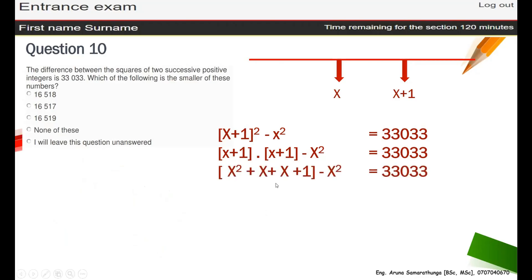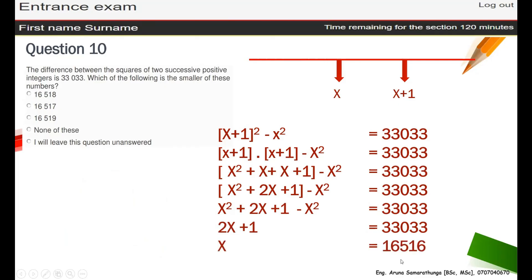Then you can solve inside. You can remove this bracket. Then this x squared and this x squared are going to remove. So you can solve: 2x plus 1.